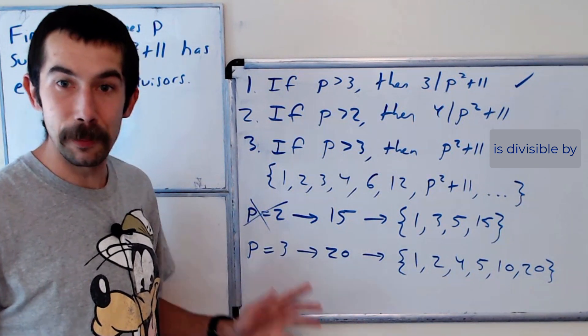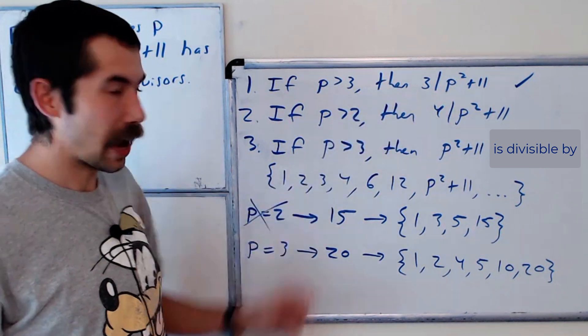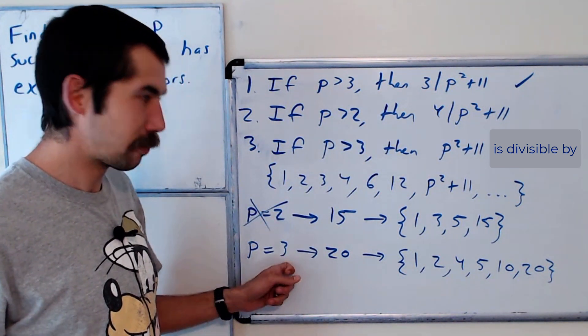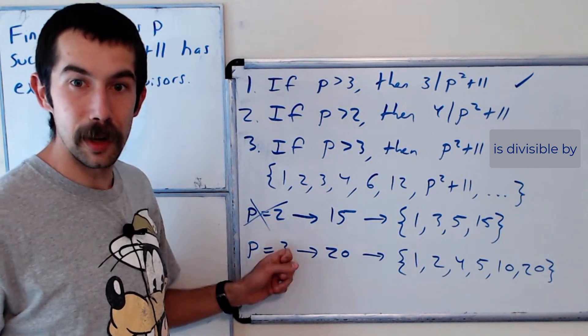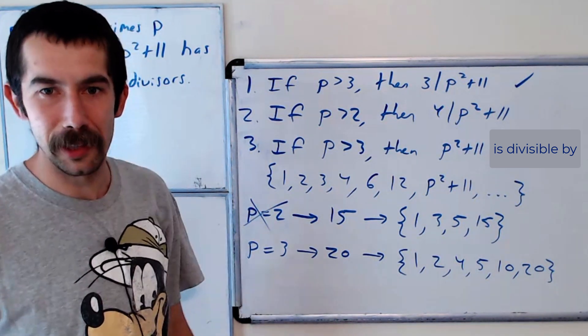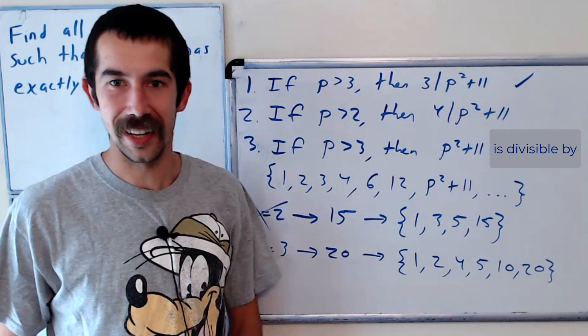So the only prime that has the property that when you square it and add 11, what remains has 6 divisors is 3, right? 3 squared plus 11 has 6 divisors. Well, let me know if you like these number theory problems. I could always do more of them. All right. See you later. Bye-bye.